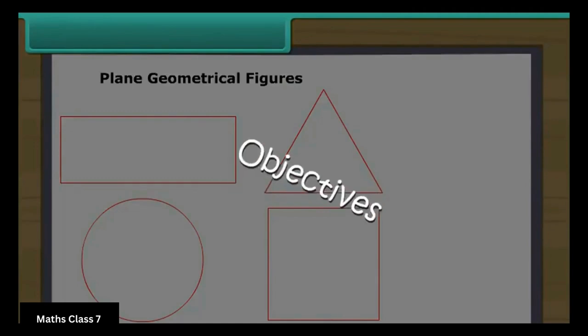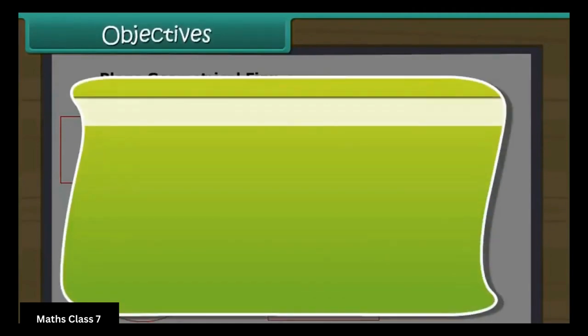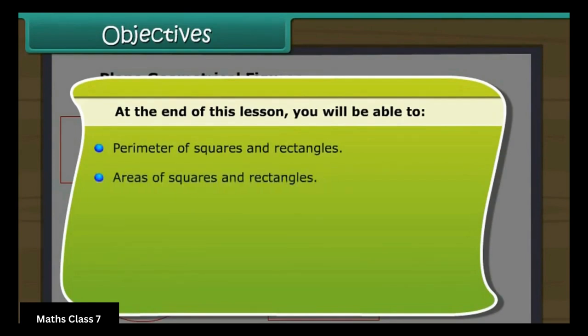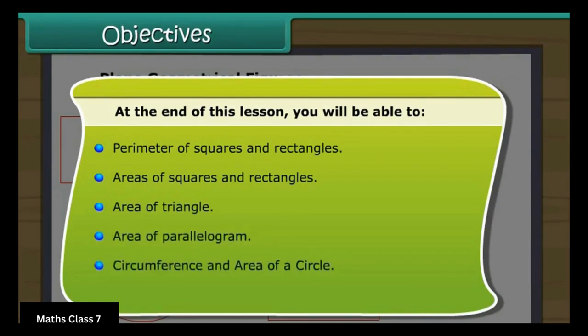At the end of this lesson, you'll be able to understand: perimeter of squares and rectangles, areas of squares and rectangles, area of a triangle, area of parallelogram, circumference and area of a circle, and unit conversions.